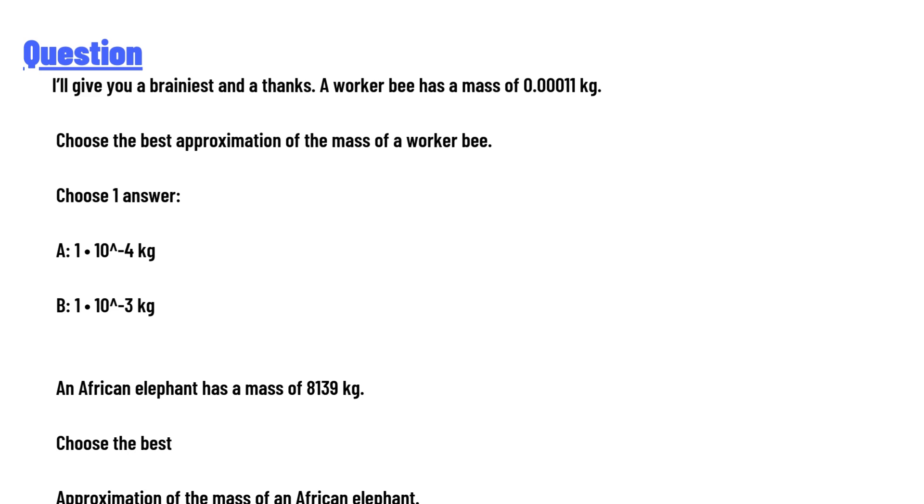An African elephant has a mass of 8139 kg. Choose the best approximation of the mass of an African elephant. Choose one answer A or B.